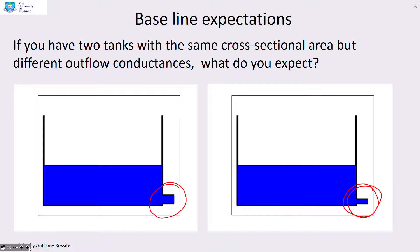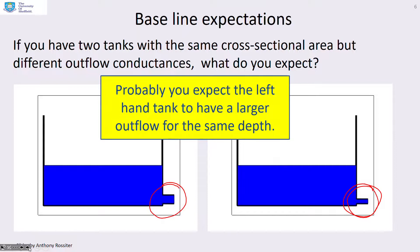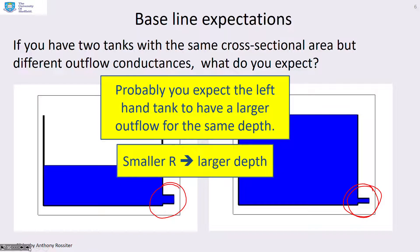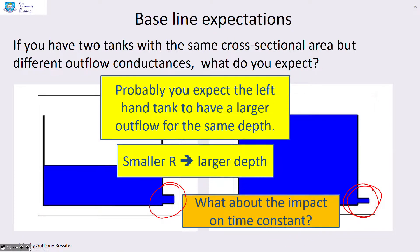In a different example, the outflow pipe is changed. The left-hand tank has a larger outflow pipe, so R is bigger, giving much more outflow for the same depth. Consequently, with a smaller R you end up with a larger steady-state depth. So if you make the outflow bigger, the depth gets smaller, and vice versa. We'll also address the impact on the time constant shortly.